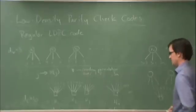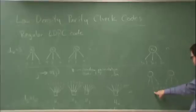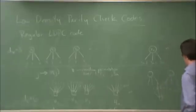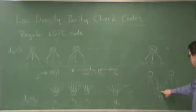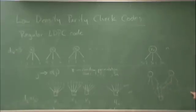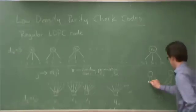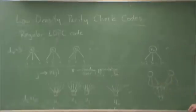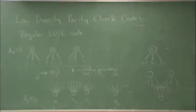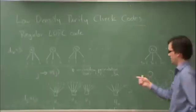For instance, we would connect check one to pi of one. Pi of one is four, so that connection is made. Check two, we would connect to pi of two, which is three. Check edge three, we would connect to pi of three, which is five. Check edge four to pi of four, which is one. And so on. So five is connected to two, and six is connected to six. That's just a random permutation on these edges, and we connect them in that random order.